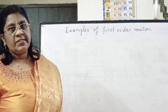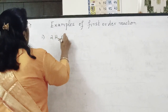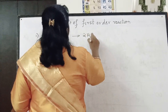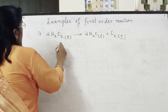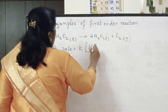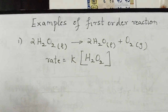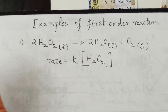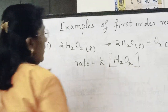Now let us study a few examples of first order reaction. Consider the reaction: 2H₂O₂(l) → 2H₂O(l) + O₂(g). The rate of this reaction can be written as rate = K[H₂O₂], since it is a first order reaction whose rate depends on the concentration of a single reactant, hydrogen peroxide.